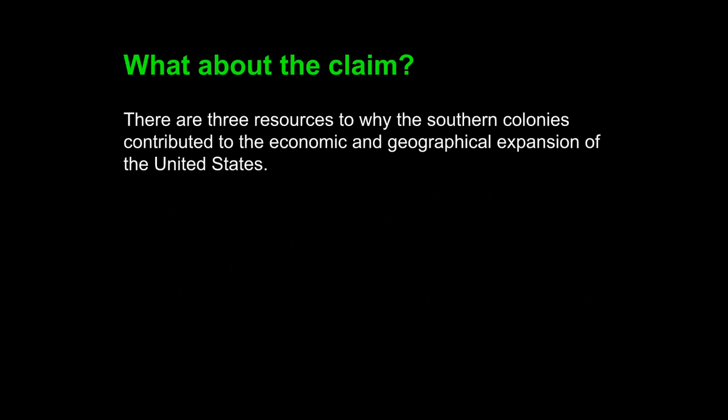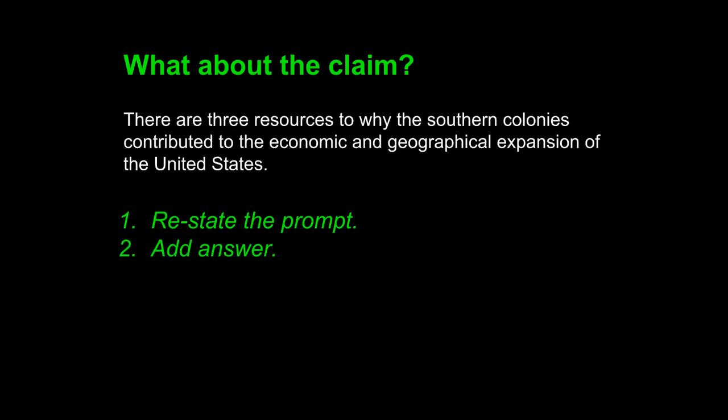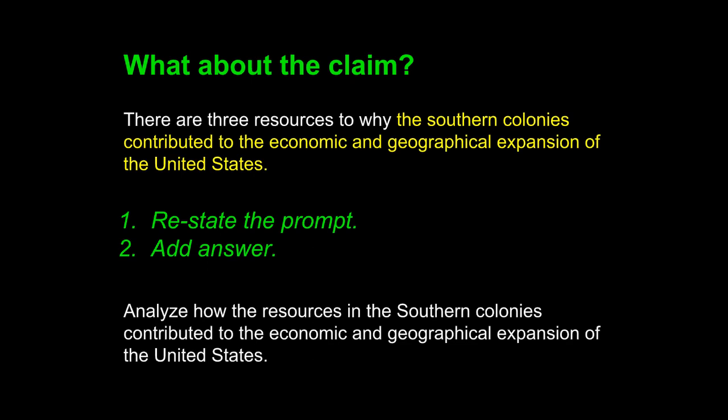Let's look first at the claim. Remember that the claim is the topic sentence — it responds to the prompt directly. This student wrote: "There are three resources to why the southern colonies contributed to the economic and geographical expansion of the United States." The sentence does not flow well, but it tries to do the two tasks required of any claim: first, to restate the prompt; and second, to add an answer. The student restated the prompt and also tried to answer with the word "three," which indicates what will happen in the paragraph to follow.